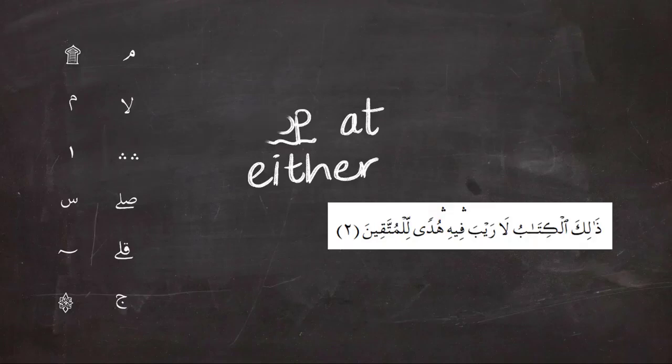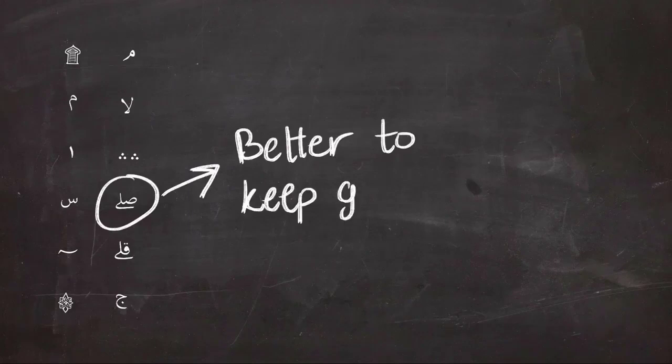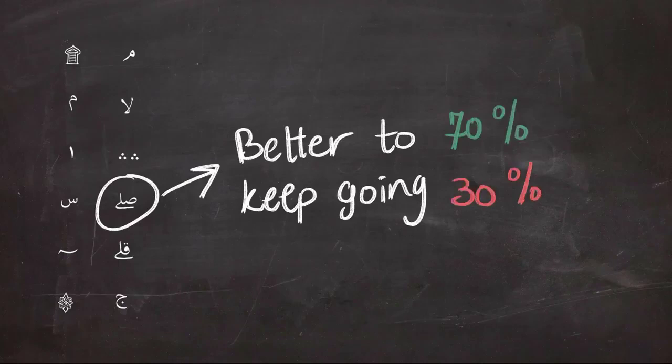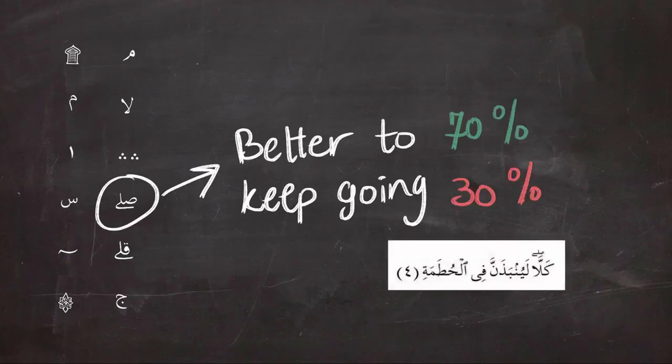Next is the symbol that looks like the word 'sil,' and it means you better keep going. We could basically compare it to 70% go, 30% don't go, and it means that it is better to keep reading, like in the example.